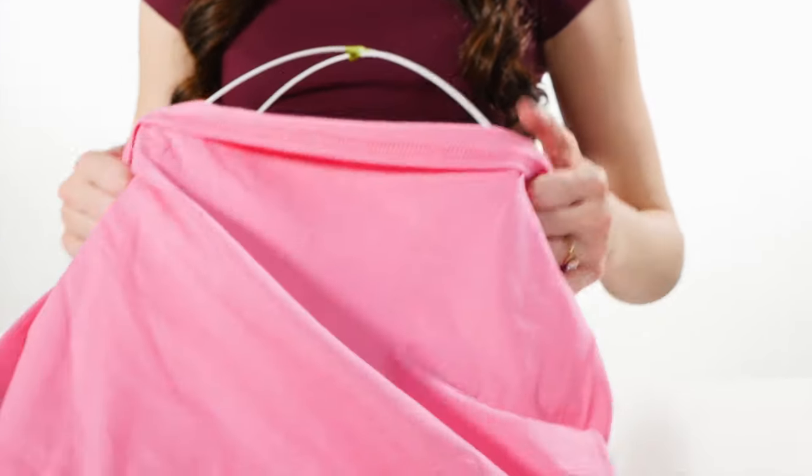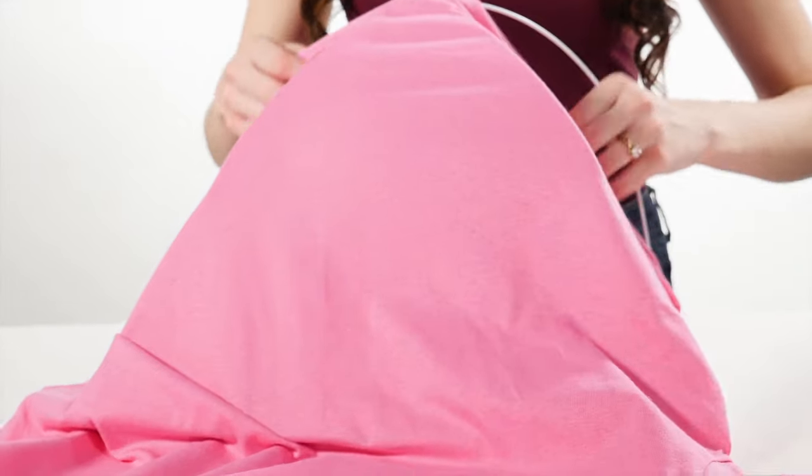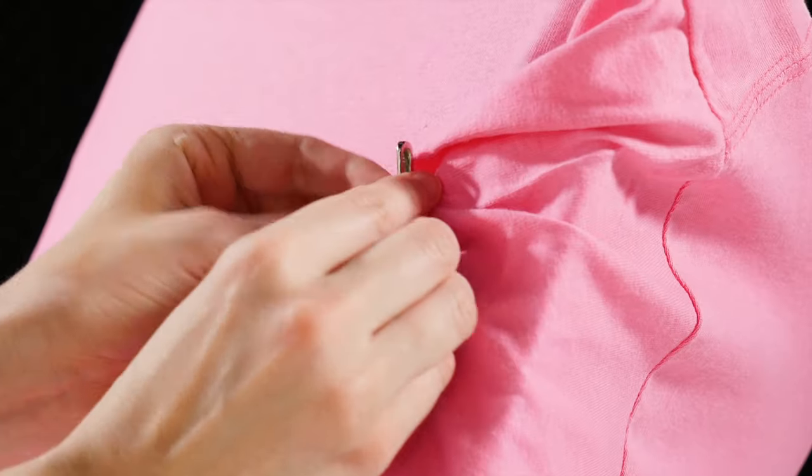Slide the t-shirt over the tent frame with the neck hole in front. Pin down the sleeves and bottom of the shirt so that there are no holes, and there you go.